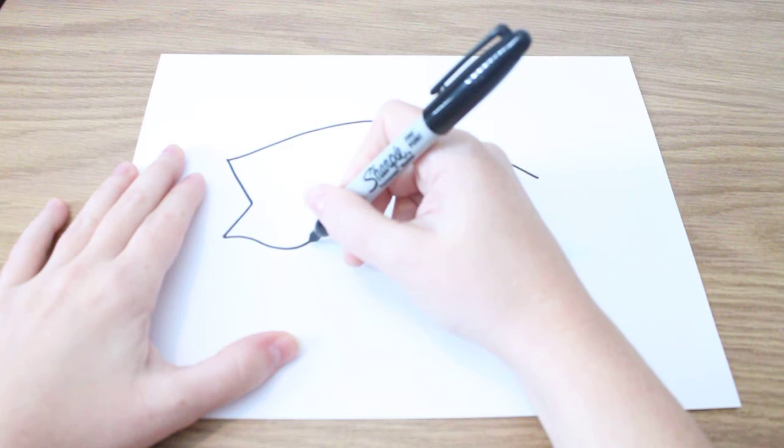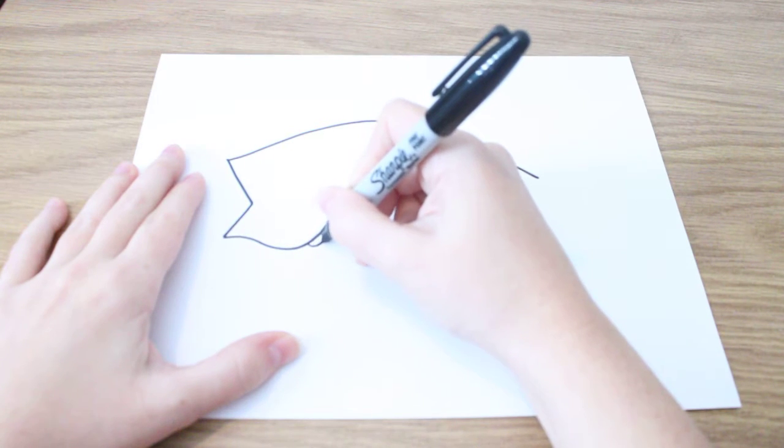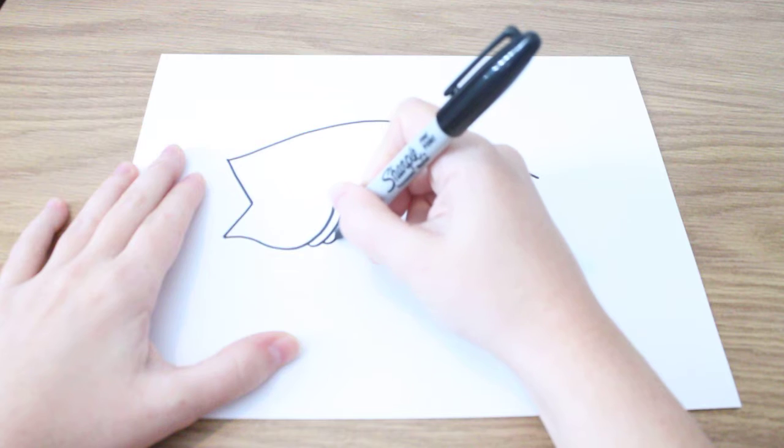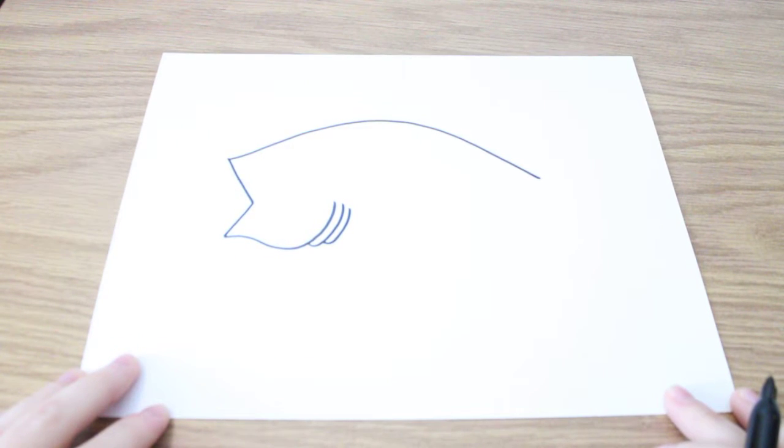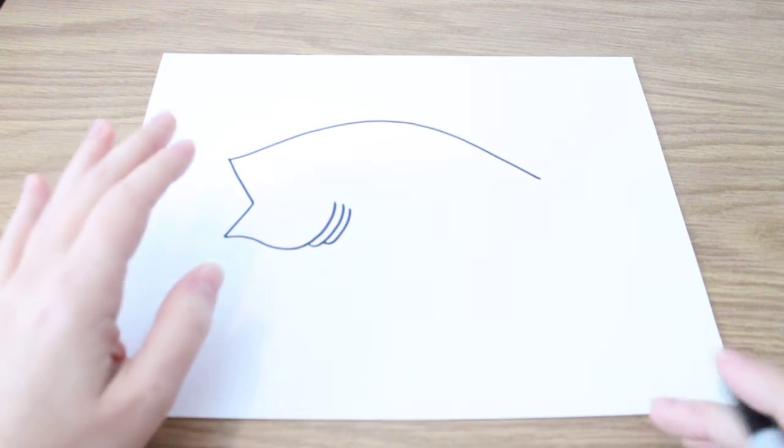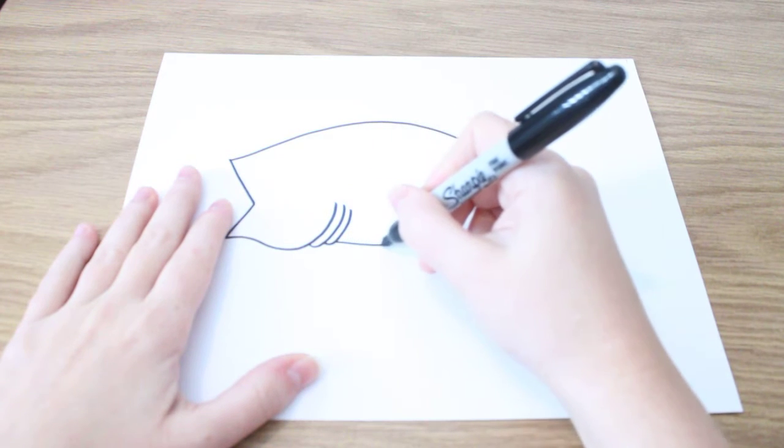I'm just going to go underneath the gills and make another curve and another one. There's the gills. Now I can finish the body.